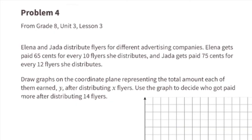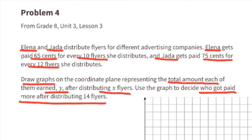Problem number 4 from 8th grade, Unit 3, Lesson 3. Elena and Jada distribute flyers for different advertising companies. Elena gets paid $0.65 for every 10 flyers she distributes, and Jada gets paid $0.75 for every 12 flyers she distributes. Draw graphs on the coordinate plane representing the total amount each of them earned (Y) after distributing X flyers. Use the graph to decide who got paid more after distributing 14 flyers.